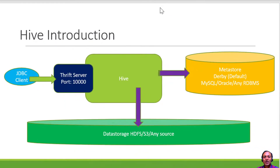Let us understand how the Hive interpreter works within Zeppelin. Before getting into the Hive interpreter, let us have a quick understanding of Hive architecture. Hive is a data warehouse offering within the Hadoop ecosystem which uses a metastore to store meta information about the data. It can use any RDBMS; by default it uses a database called Derby.